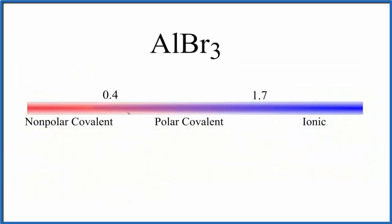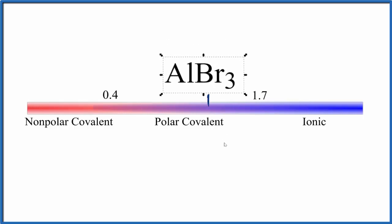So on this chart here, we can see nonpolar down here, zero, and then ionic up on this end. So 1.3, that's about right here. So aluminum bromide, we would put that to be polar covalent with a significant degree of ionic character.